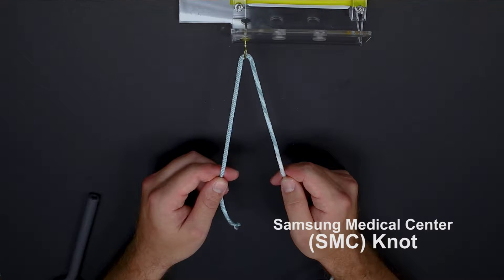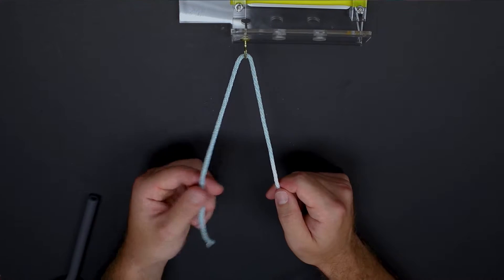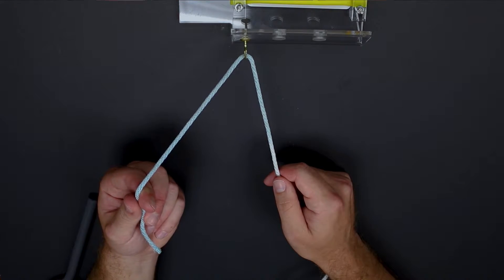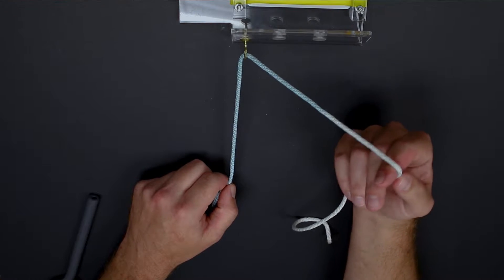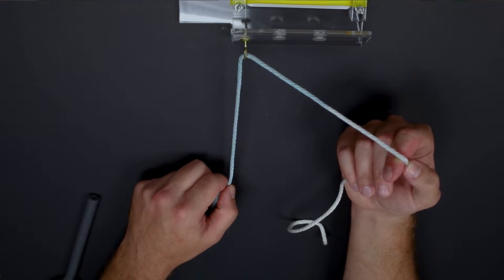The SMC knot or Samson Medical Center knot is a sliding locking knot. This is tied by first starting with the post limb, in this instance the left hand colored blue, and your loop limb in this instance in my right hand colored white.